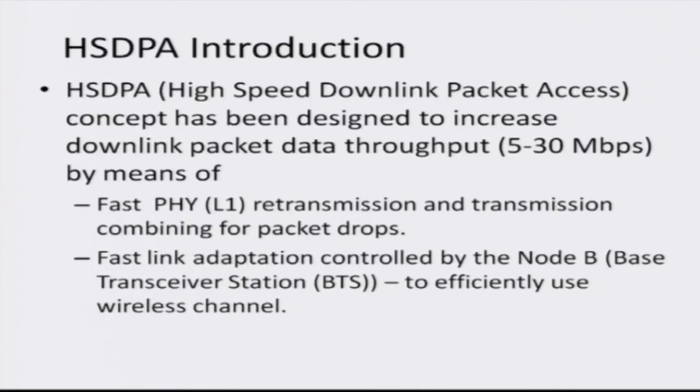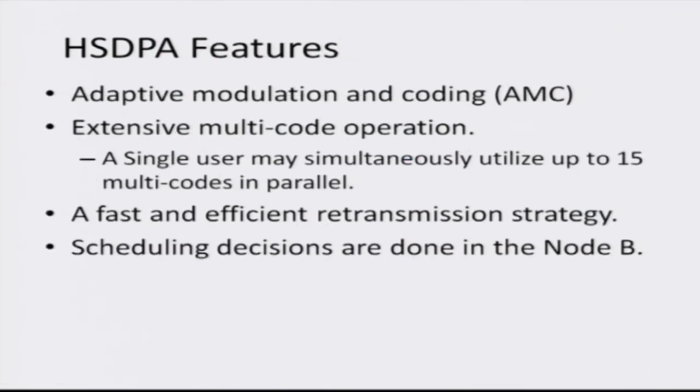A brief introduction to HSDPA — high speed downlink packet access — which has been designed to further increase the data rate from about 2 megabits per second in WCDMA to about 30 megabits per second. This is achieved through a large number of smart schemes: fast retransmission, link adaptation — adapting the transmission strategy to the strength of the signal — adaptive modulation, which adaptively changes the number of bits transmitted per symbol depending on link strength, efficient retransmission, and scheduling decisions. Scheduling determines which users — whether using video, voice, internet, or email — need how many resources and when to be served, making intelligent decisions to increase the overall efficiency of the network.